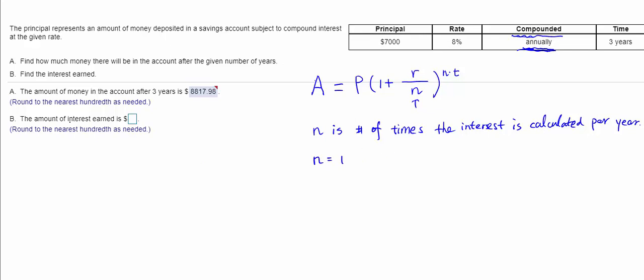To find the future value, the amount of money in the account after three years, calculate A = 7000(1 + 0.08/1)^(1×3). The principal is $7,000, the interest rate is 8% or 0.08, n = 1 since it's compounded annually, and t = 3 years.